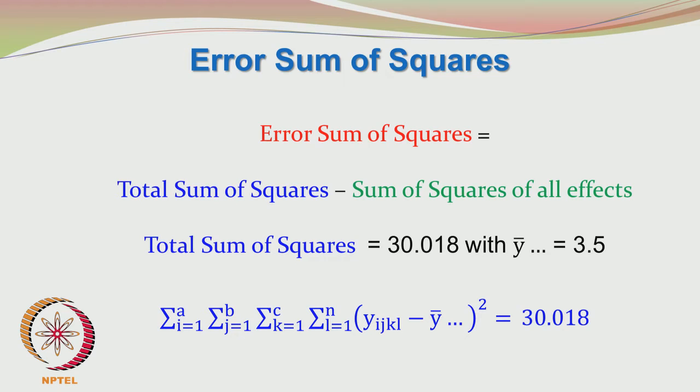Continuing with our example involving 3 factors in the 2³ factorial design. First we will calculate the error sum of squares. We have to calculate the total sum of squares first and then subtract from it the sum of squares of all the effects.